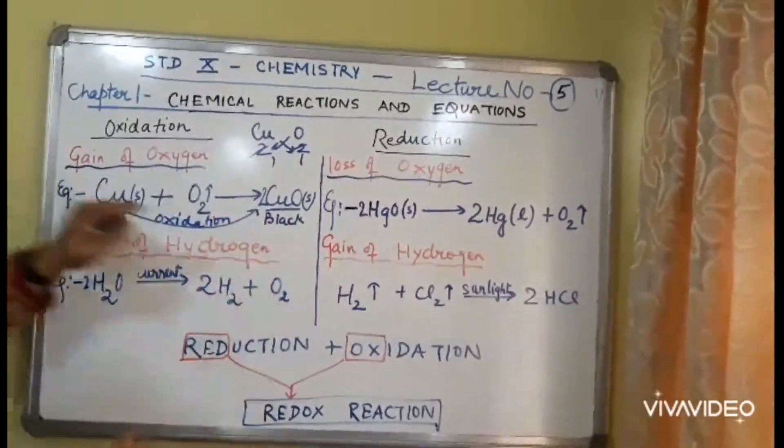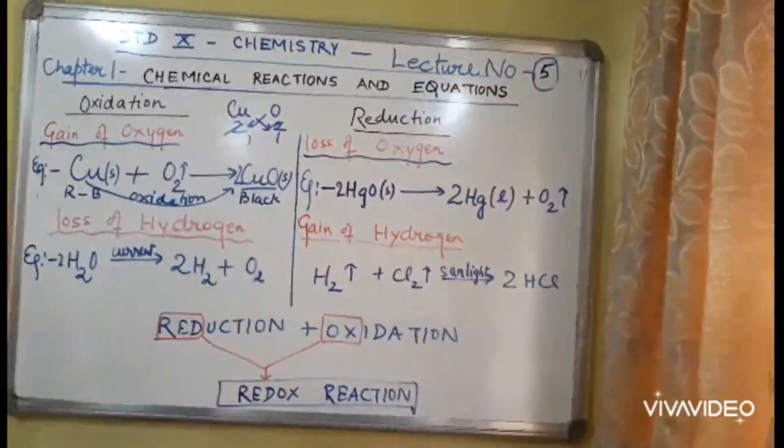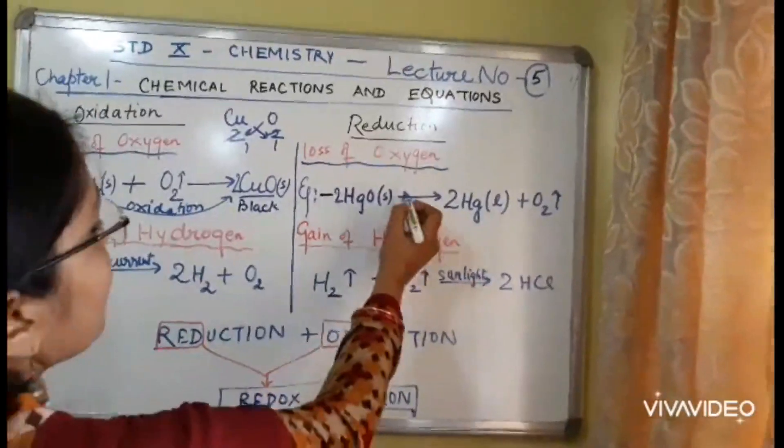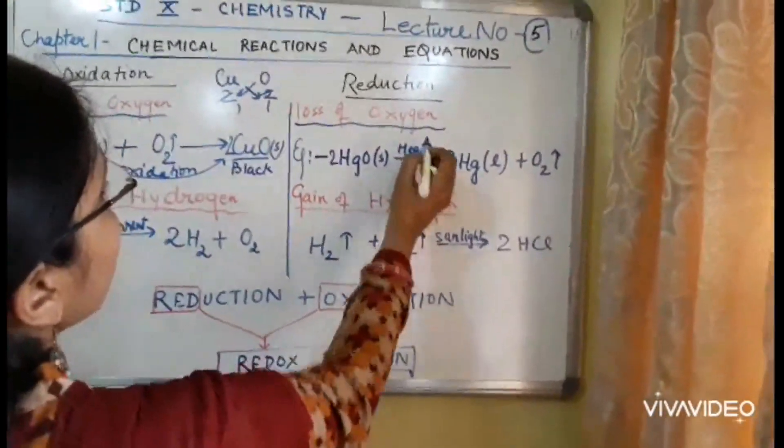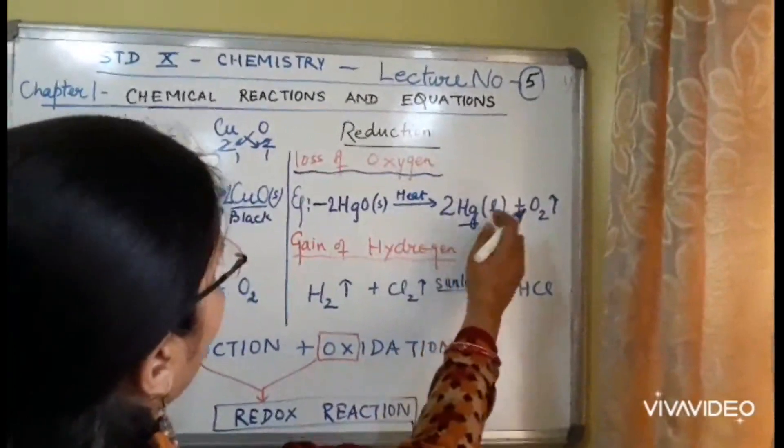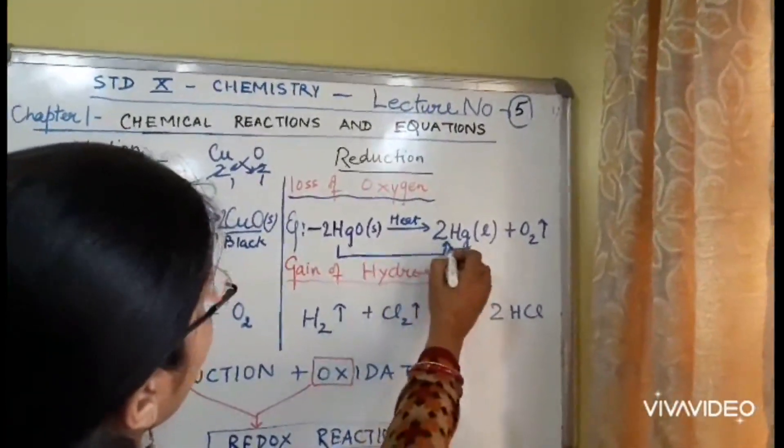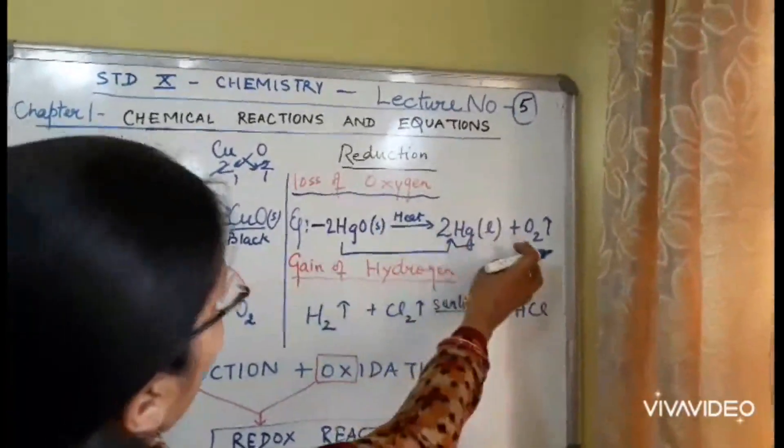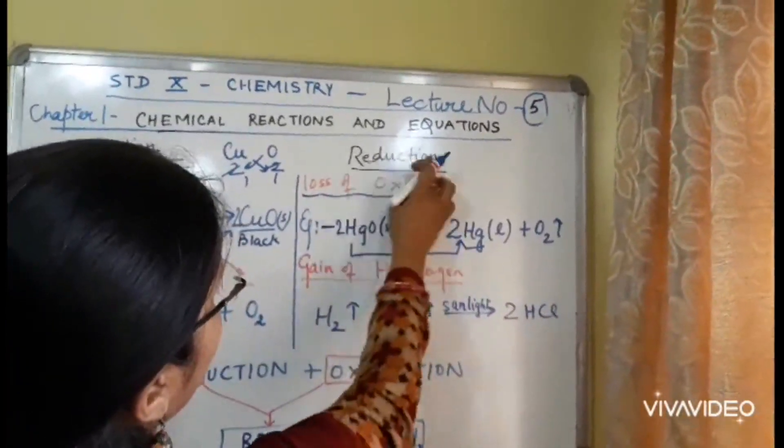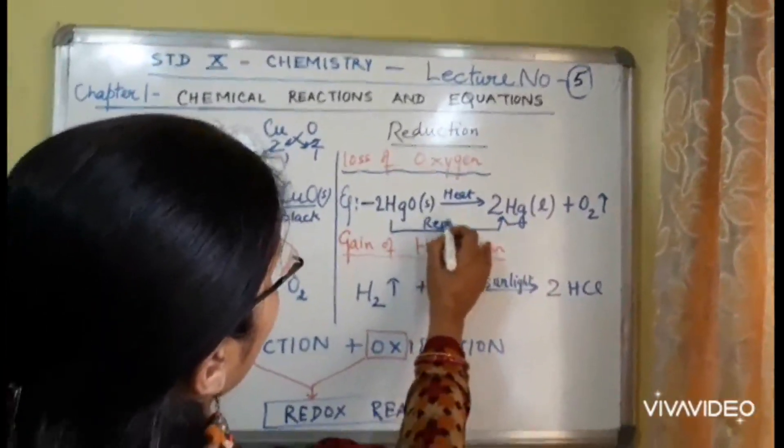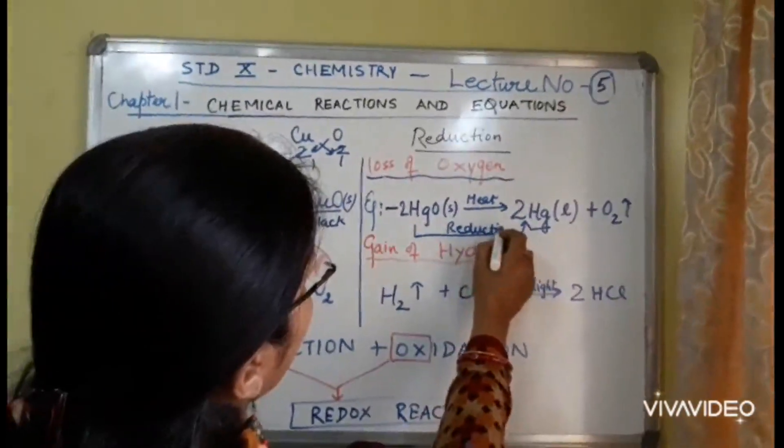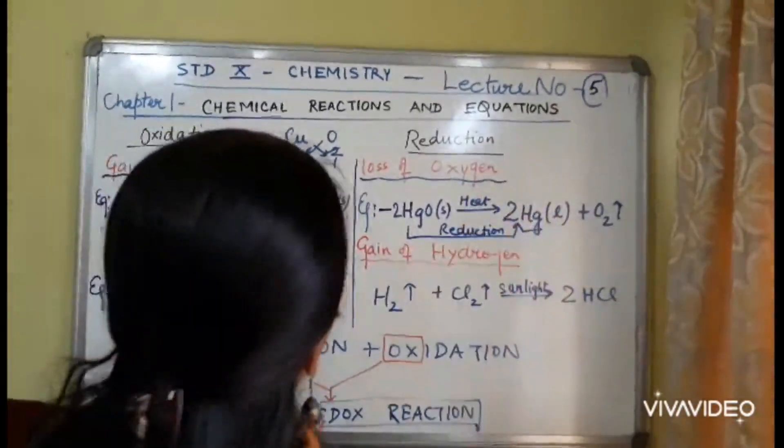Look at this example. Mercuric oxide, HgO. When you heat it for a long time, it changes to mercury and loses oxygen. HgO is changing to Hg by loss of O. Loss of oxygen, reduction. So HgO shows reduction and changes to Hg.